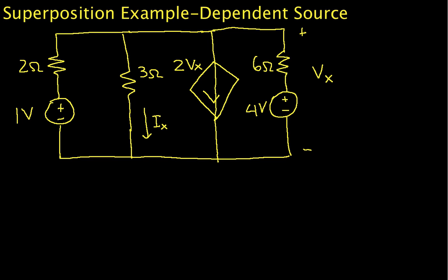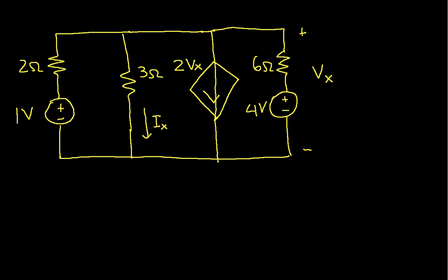Welcome to this example of using superposition to find voltages and currents in a circuit with a dependent source. The goal of our exercise is to find Ix and Vx in the circuit below.